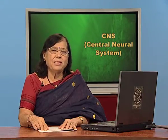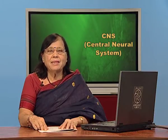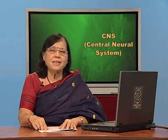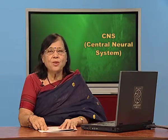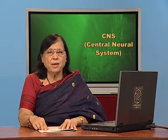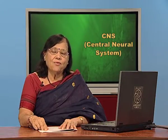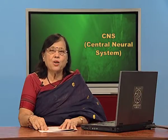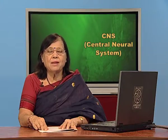An important point is that in the brain the outer area is grey matter and the central area is white matter, whereas it is just the opposite in the spinal cord, where you have grey matter in the centre surrounded by white matter. Grey matter is formed by the cellular part — the cytoplasmic part of the cell — and white matter is formed by the axonal part.